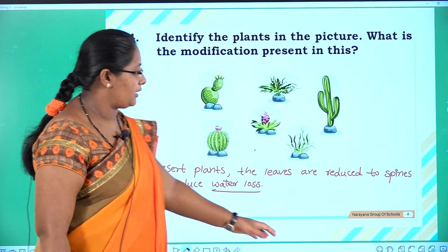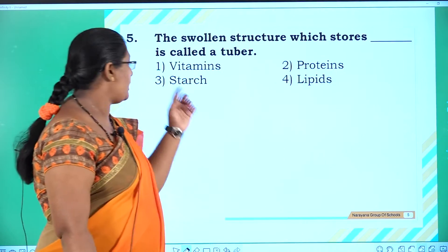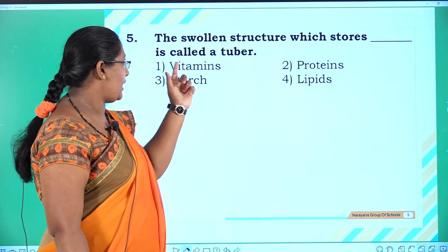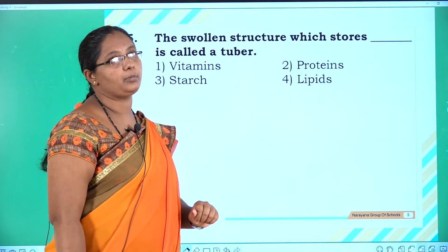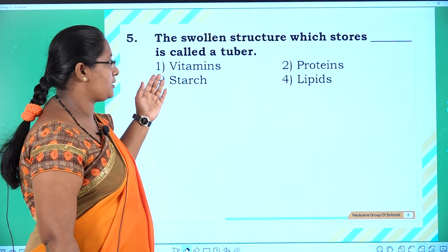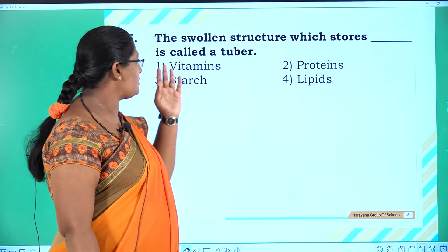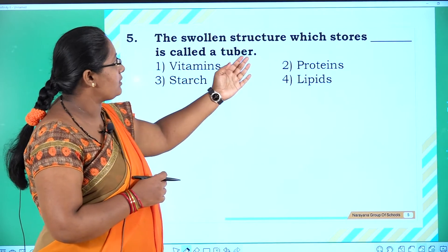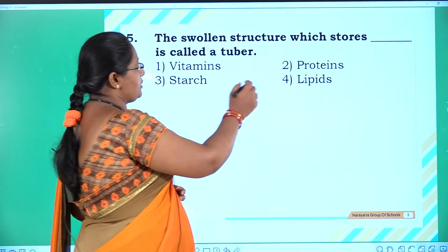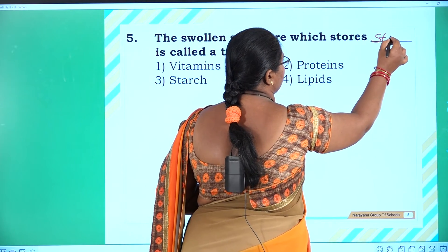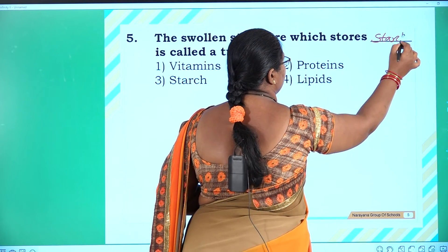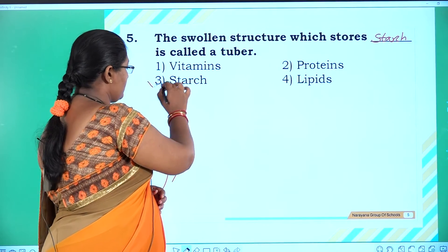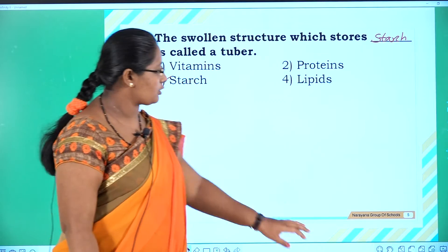Fifth question: The swollen structures which store ___ are called a tuber. Options: one vitamins, two proteins, three starch, four lipids. The swollen structures which store starch are called a tuber, so the answer is option three.